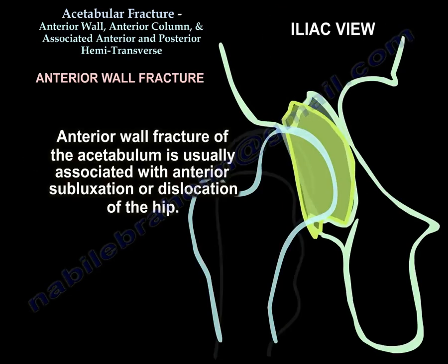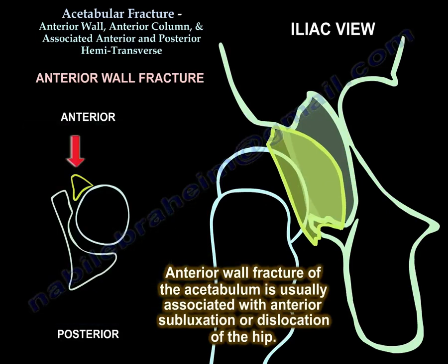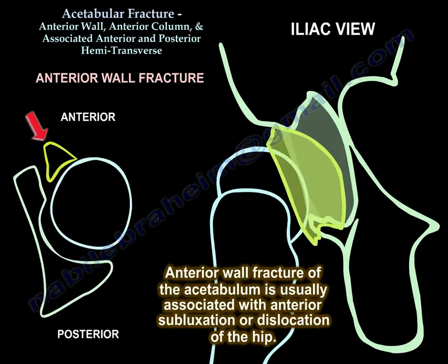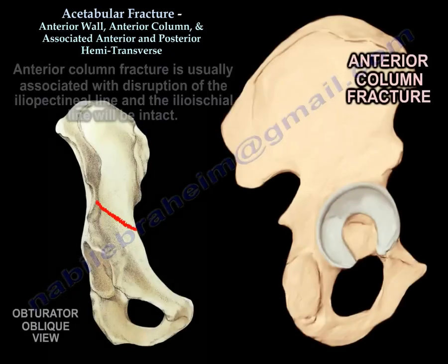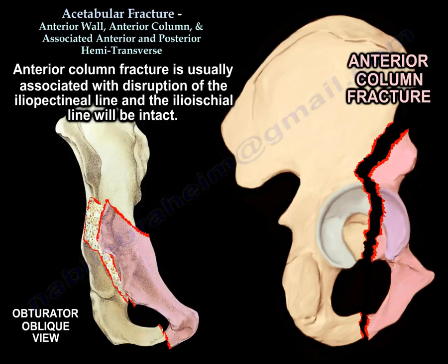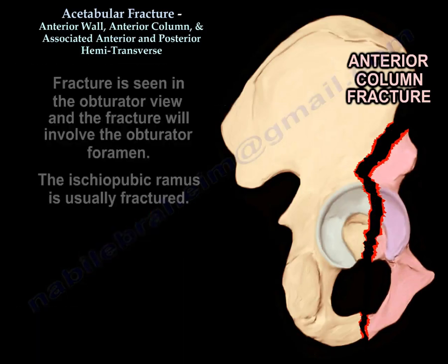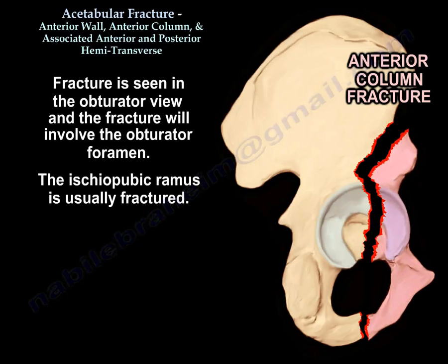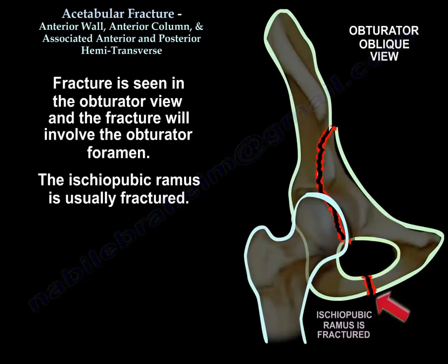Anterior wall fracture of the acetabulum is usually associated with anterior dislocation of the hip. Anterior column fracture is usually associated with disruption of the iliopectineal line, whereas in anterior wall fracture the iliopectineal line will be intact. The fracture is seen in the obturator view and will involve the obturator foramen; the superior pubic ramus is usually fractured.